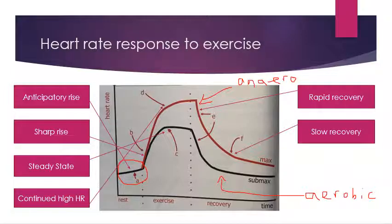For both lines, there is then a sharp rise, signified by B, because we have started exercise. Our proprioceptors pick up stimuli, hormones continue to be released, and the body starts working hard to get blood and oxygen to the working muscles, resulting in a steep rise in heart rate. We often experience feeling quite tired right at the start of exercise.